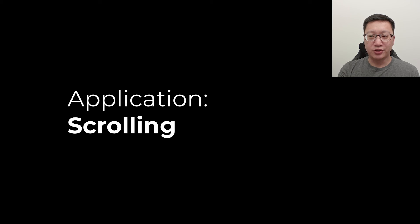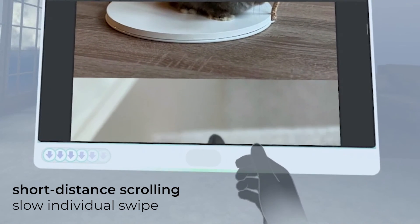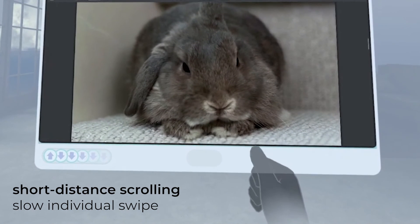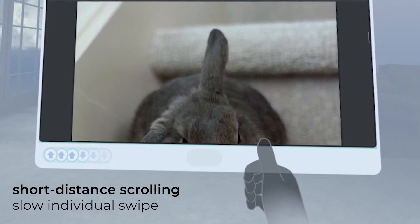Here, we explore how discrete STMG might map to continuous scrolling. When a swipe has occurred, we use the hand tracking to determine the thumb velocity and map the speed of the swipe to the speed of the scroll. Thus, slow individual swipes can produce short scrolls.